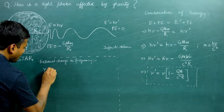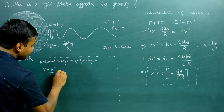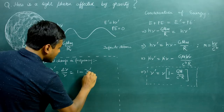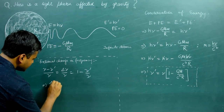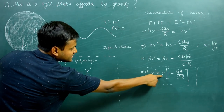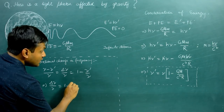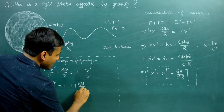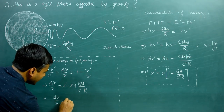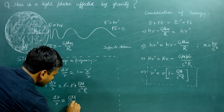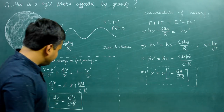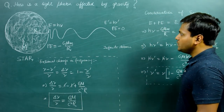The fractional change in frequency is Δν/ν = (ν − ν')/ν = 1 − ν'/ν. Since ν' = ν(1 − GM/c²R), we have ν'/ν = 1 − GM/c²R. Substituting: Δν/ν = 1 − (1 − GM/c²R). The ones cancel, and the fractional change in frequency of the light photon comes out to be GM/c²R.